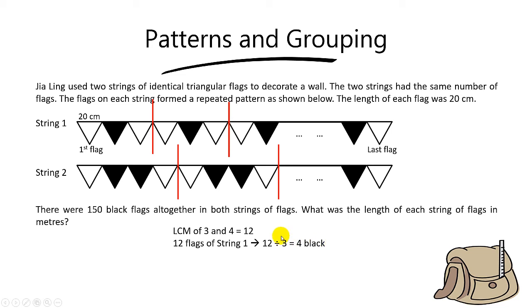And the reason is because in string 1, every 3 flags will give you 1 black. So in 12 flags, to find the number of black, you simply take 12 divide by 3, you get 4 blacks. So 12 flags of string 1 will contain 4 black flags.